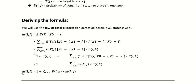So M-I-J is equal to 1 plus the summation of all K not equal to J, of the probability of going from state I to state K in one step, times the expected amount of time it will take to go from state K to state J. That sounds a little complicated, but once I show you this in a problem, it won't be that hard.